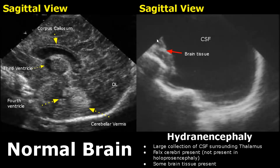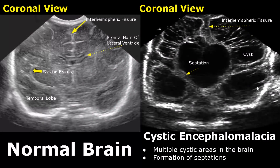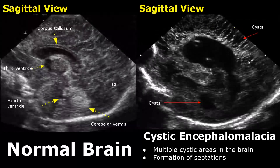Cystic encephalomalacia is a condition in which there are multiple cystic areas in the brain along with formation of septations — multiple cysts and septations are seen. Here is a sagittal view showing cystic encephalomalacia — we see various cysts and septations within the brain.